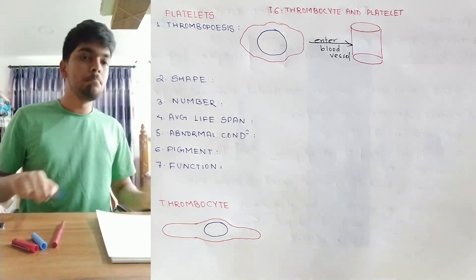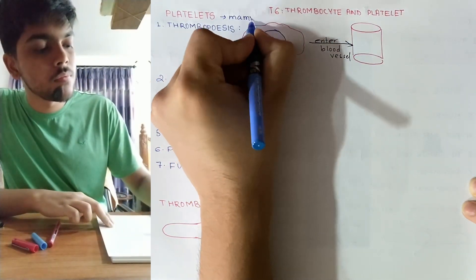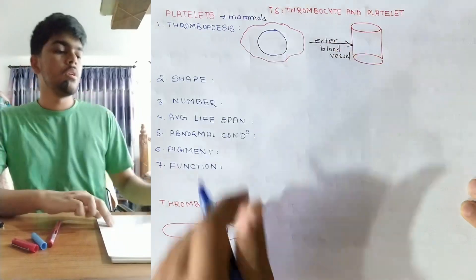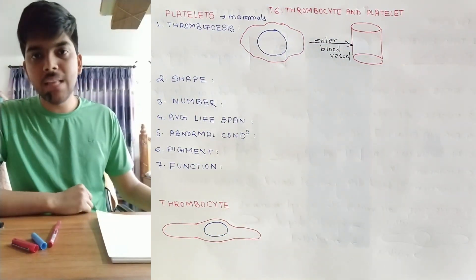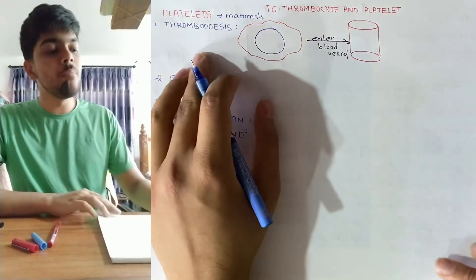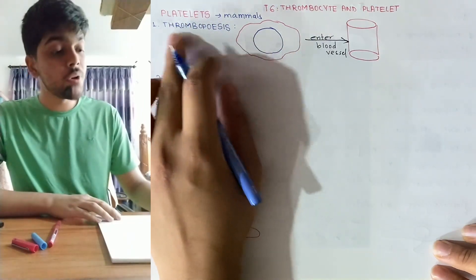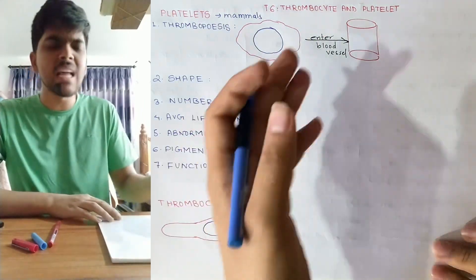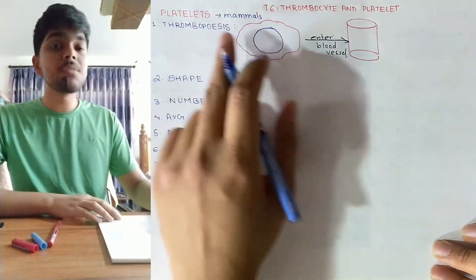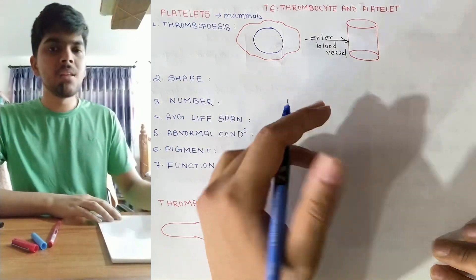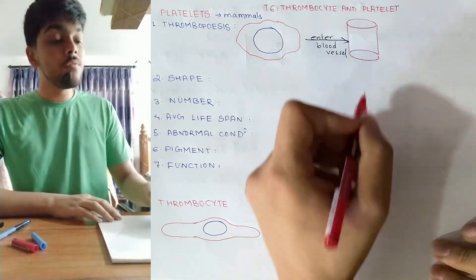First, let's look at platelets. Platelets are found in mammals. We are going to study the various properties of platelets the same way we did with RBCs and WBCs. The first point is the formation of platelets, which is known as thrombopoiesis — where 'thrombo' refers to platelets or thrombocyte, and 'poiesis' means formation.